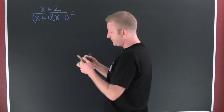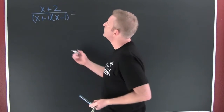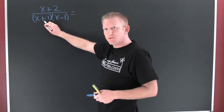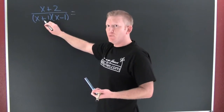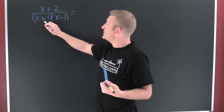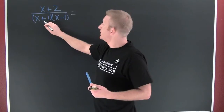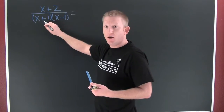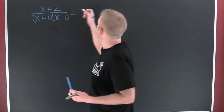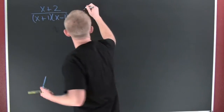So here's what I need. I need an A and I need a B. These are linear powers, so my numerator, when I un-add them, needs to be one degree less. So this is degree one, so I want a degree zero term.